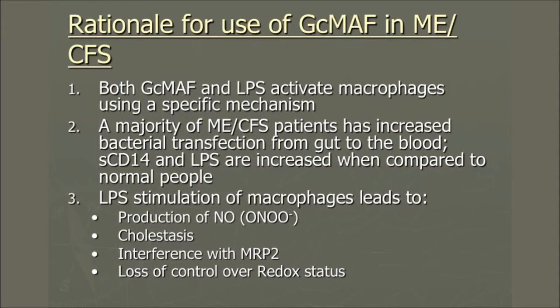So what is the rationale for the use of GC-MAF in ME/CFS? Both GC-MAF and LPS activate macrophages using a specific mechanism — the mechanisms are different. We know that GC-MAF activates macrophages, but LPS does so too. A majority of ME/CFS patients have increased bacterial translocation from the gut to the blood — it's not only us who has demonstrated that.